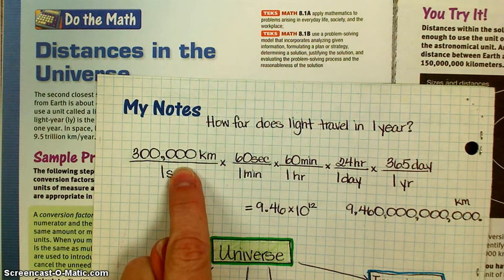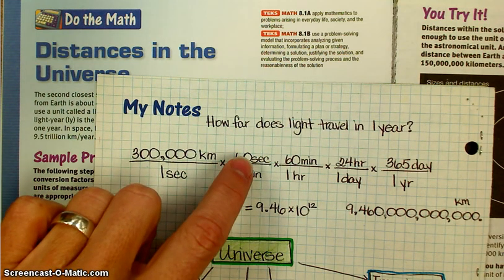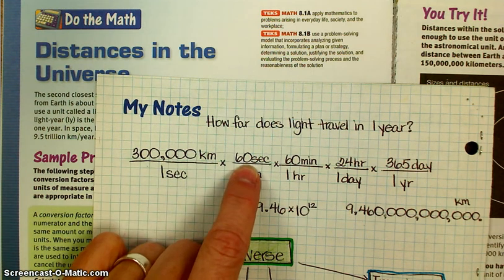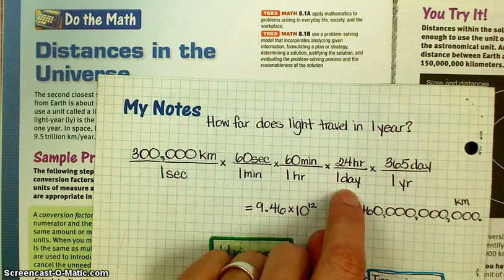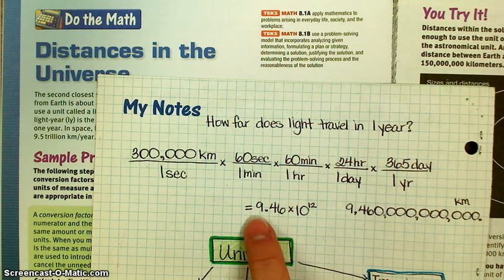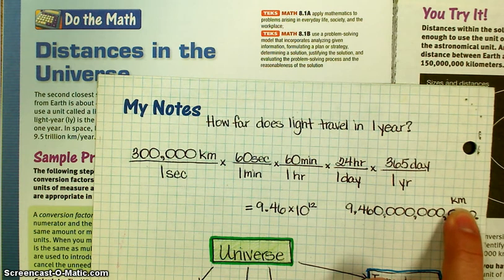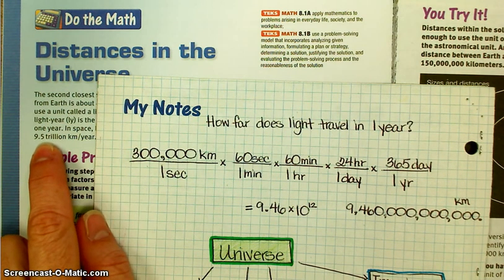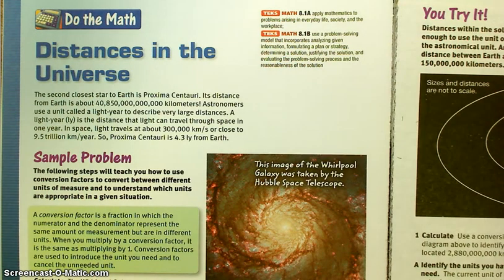If it's traveling 300,000 kilometers every second, then how far would it go in a year? Well, in one minute there's 60 seconds, so you'd multiply it by 60. There's 60 minutes in an hour, so you'd multiply by 60 again. There's 24 hours in a day, so multiply by 24, 365 days in a year, so multiply by 365. When you get all of that, you get 9.46 times 10 to the 12th, or this big long number. What they've done here is they've taken that number and rounded it off a little bit and called it 9.5 trillion kilometers.